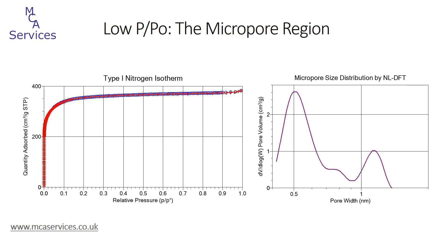Isotherms tend to be classified by the BDDT system, named after its creators Brunauer, Deming, Deming and Teller. There's a total of six classifications, all based on the shape of the adsorption isotherm, and there are further classifications based on the shape of desorption hysteresis, but we'll leave that for another video.